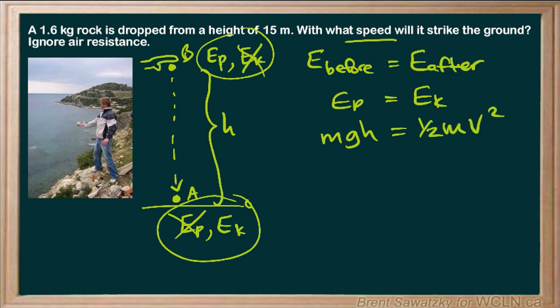The masses cancel out, which tells us that — as long as we can ignore air resistance — it doesn't matter if it's a little rock, a big rock, a basketball, or a boulder; this prediction holds true for anything not significantly impacted by wind resistance. To rearrange for velocity, multiply both sides by two to remove the one-half, then square root both sides.